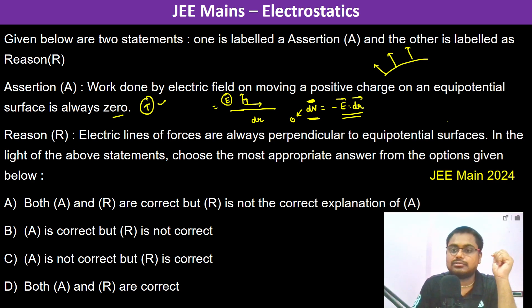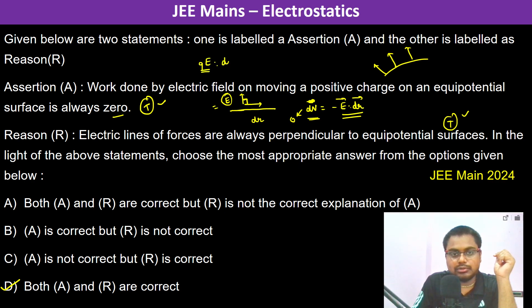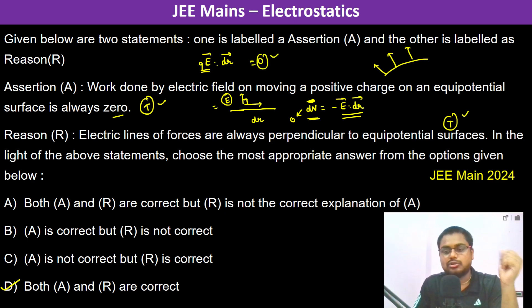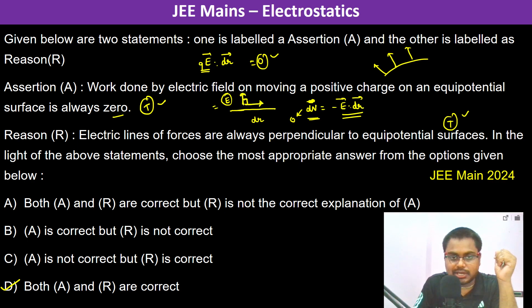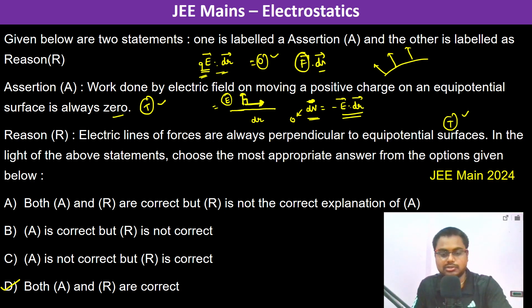Both A and R are correct. Work done by the electric field is W = F·dr = qE·dr, which again equals zero because the force is perpendicular to the displacement — angle is 90 degrees. So the net work done is zero. Both statements are true.